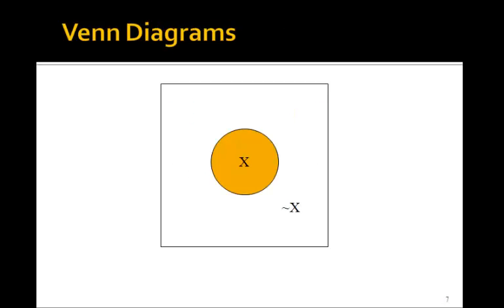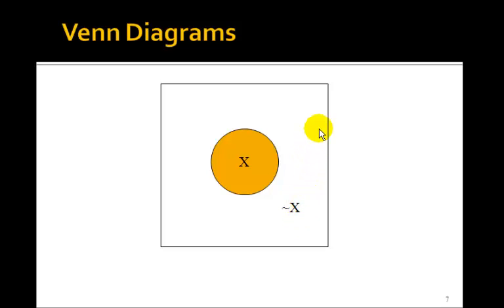Now I want to introduce what's called a Venn diagram. These are going to make it easy to verify logic identities — Boolean identities. The idea is we'll draw a circle and think of x as being inside the circle as being true, i.e., x equals 1. Outside the circle is NOT x — that is, x is false. So x is either true or false, somewhere within a square we draw around here. If it's inside the circle, it's true — we call that x. If it's outside, it's false — that's NOT x.